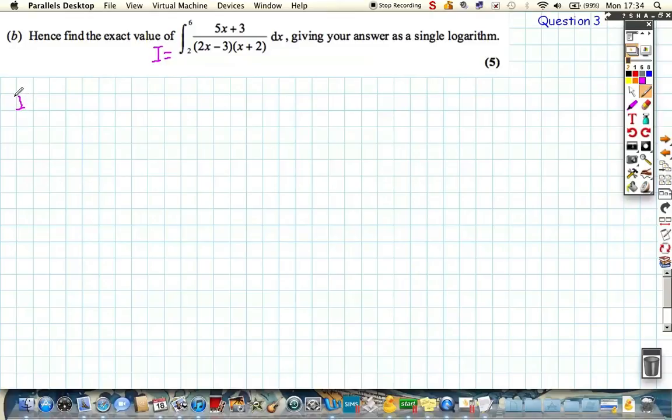So if we call this expression I, really we can rewrite I as the integral of both of the partial fractions. So we can rewrite it, the integral from 2 to 6 of 3 over 2x minus 3 with respect to x, plus the integral from 2 to 6 of 1 over x plus 2 with respect to x.